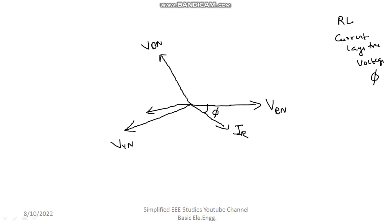This is your IY. That is also lagging at an angle of φ degrees. Then IB. Let me draw the IB. IB is also lagging at an angle of φ degrees. Hope you got till this point.